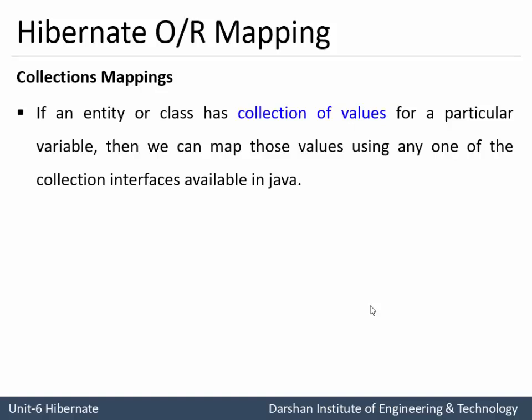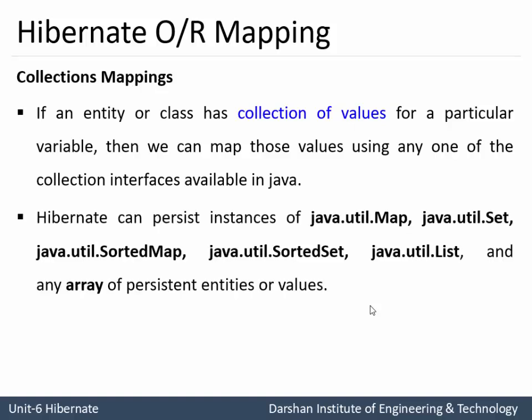For example, if an entity named Person is having two contact numbers, that is known as a collection of values. If a person is having more than one email, then it is also known as a collection of values. Hibernate can persist instances of java.util.Map, java.util.Set, java.util.SortedMap, SortedSet, List, and any array of persistent entities or values. So here we can map any collectively persistent object with the database with the help of Hibernate ORM Mapping, where persistent objects mean those objects which are mapped with database entities.